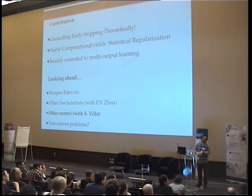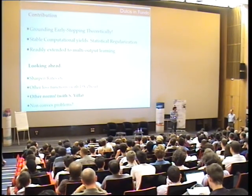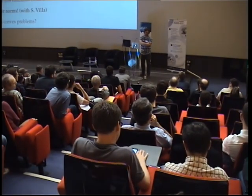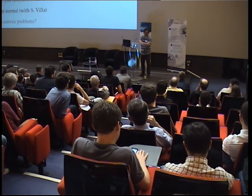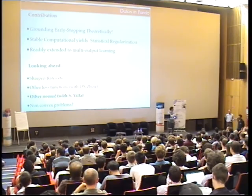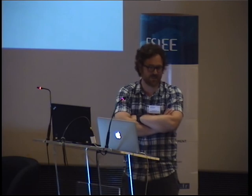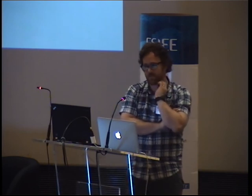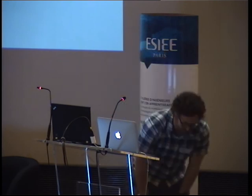Final question: do the regularization paths of Tikhonov and early stopping actually go through the same models, or do they take quite different paths? Answer: they are pretty much the same. You can show via a power series expansion that early stopping and Tikhonov are equivalent up to second order — they are essentially the same thing statistically and differ only from a computational perspective, which the theorem also confirms.